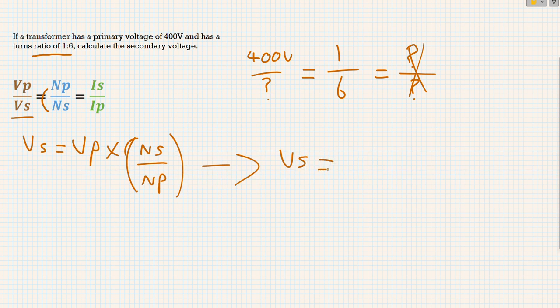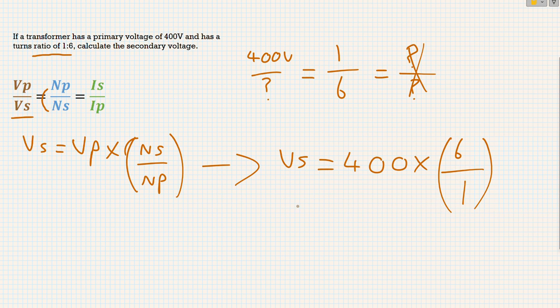So the voltage secondary is going to be equal to the VP, which is the voltage primary, 400 volts. So we're going to do 400 multiplied by what we do know, which is this turns ratio. But we flipped it round, haven't we? So it's not going to read as one over six. It's going to read as six over one. And when we input those values into a calculator, that's going to come out and give us an answer of 2,400 volts.